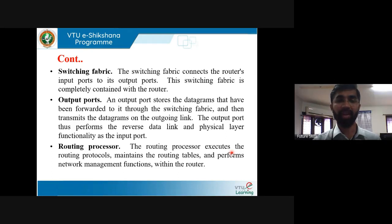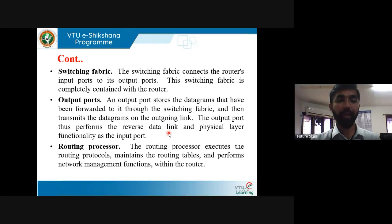What is the output port? An output port stores the datagrams that have been forwarded to it through the switching fabric and then transmits the datagram on the outgoing link. The output port performs the reverse operation of the input port — that is, reverse data link and physical layer functionality. The routing processor executes the routing protocol, maintains the routing table, and performs network management functions within the router.